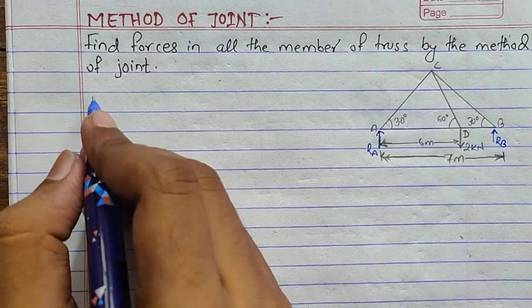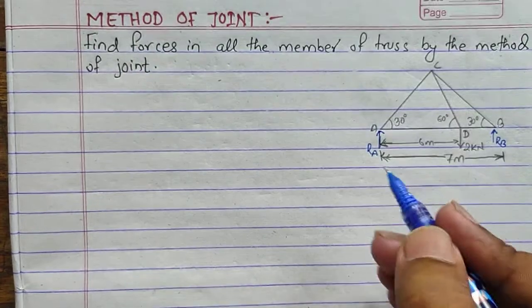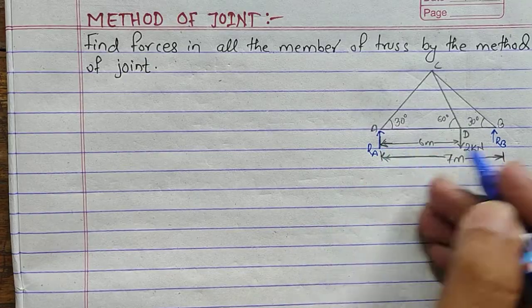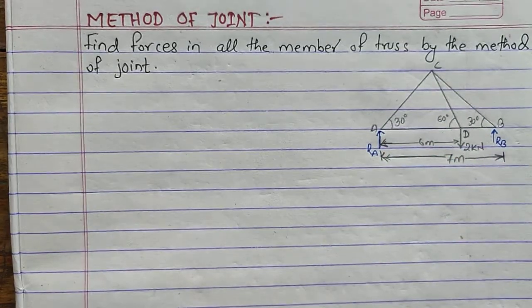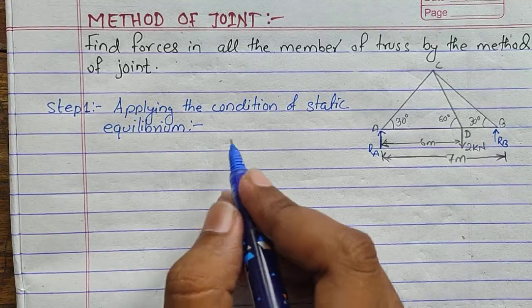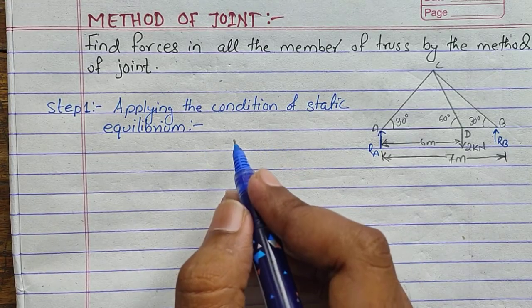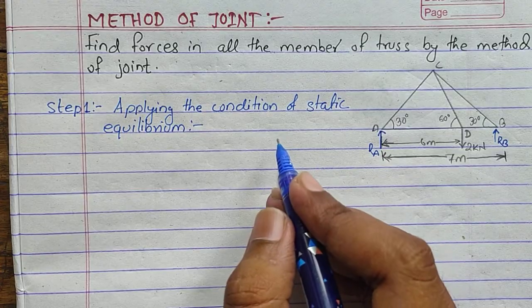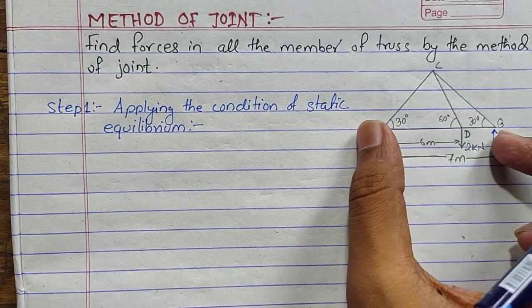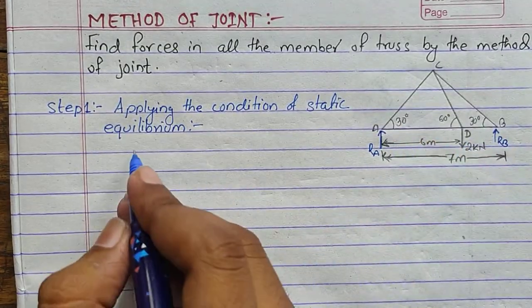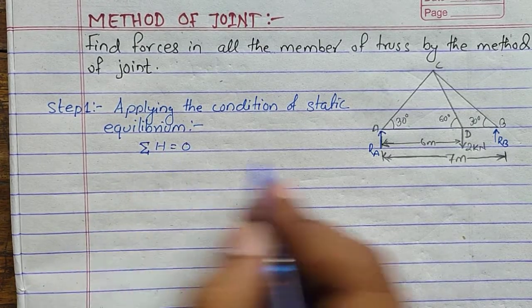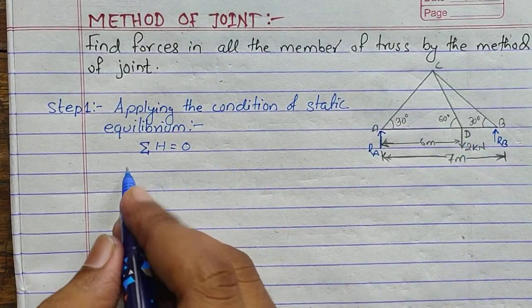Our first step is to apply the conditions of static equilibrium to find the reactions at A and B. The conditions are: ΣH=0 (sum of forces in horizontal direction equals zero), ΣV=0 (sum of forces in vertical direction equals zero), and ΣM=0 (sum of moments equals zero). As you can see in the given diagram there are no horizontal forces, so ΣH=0 is automatically satisfied.